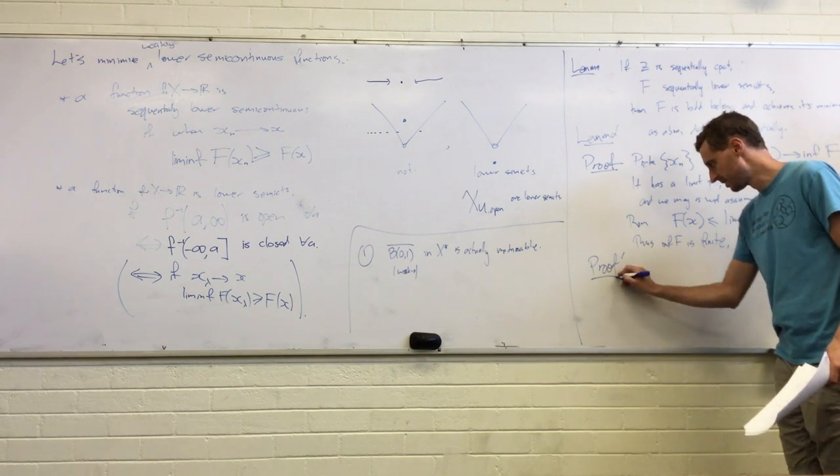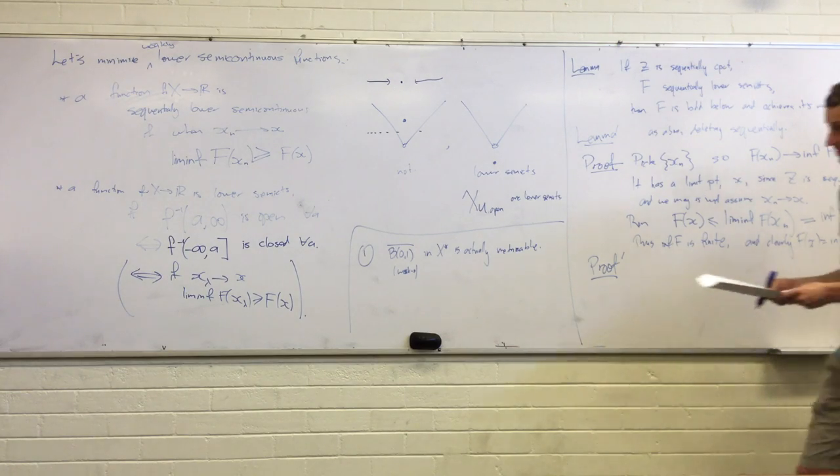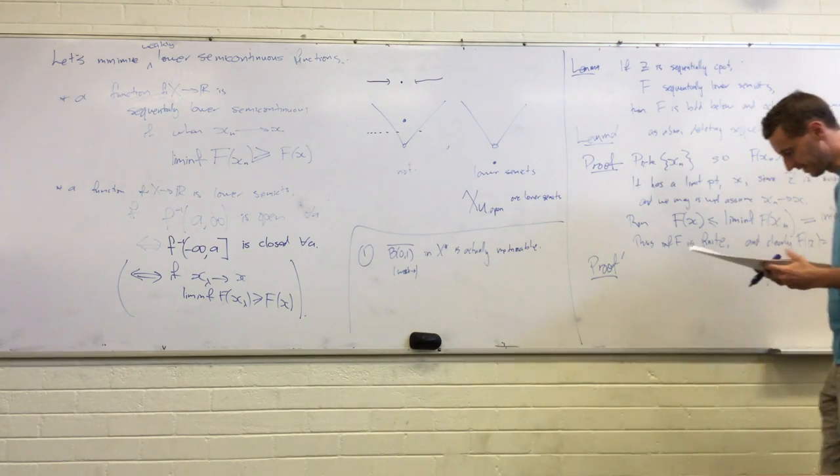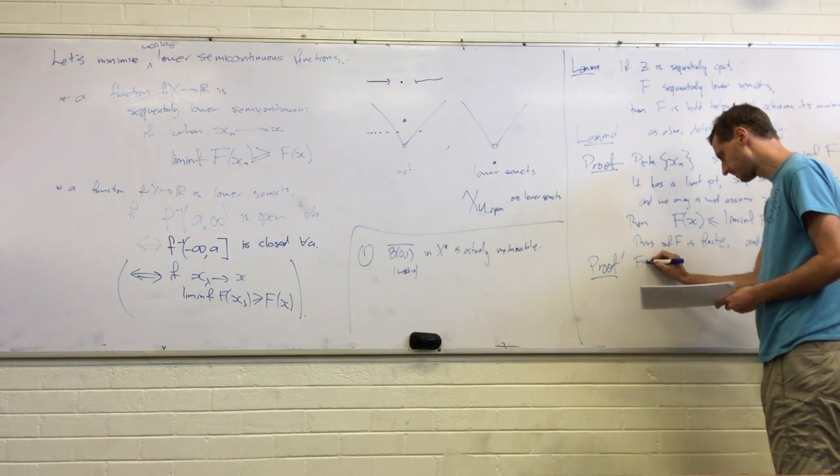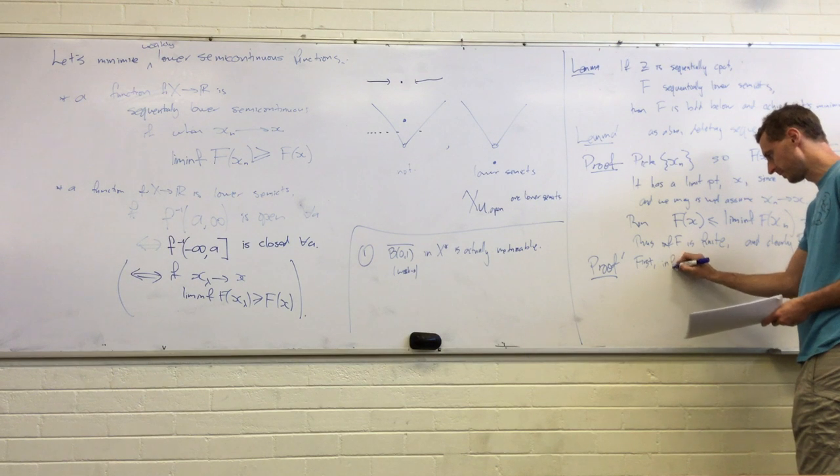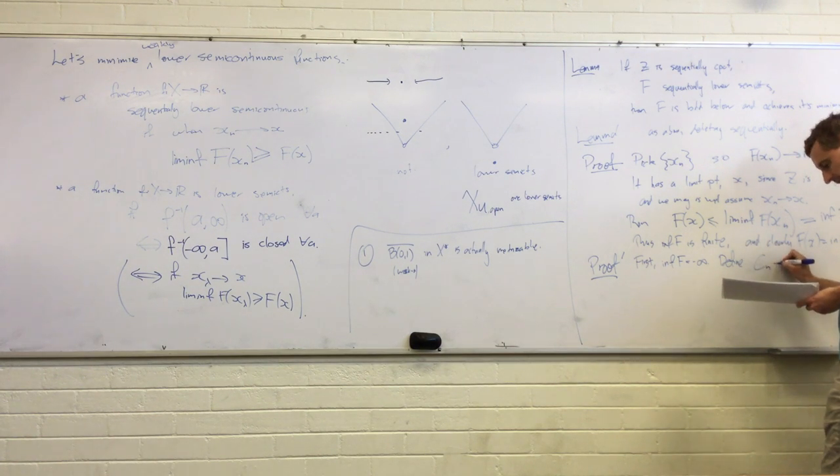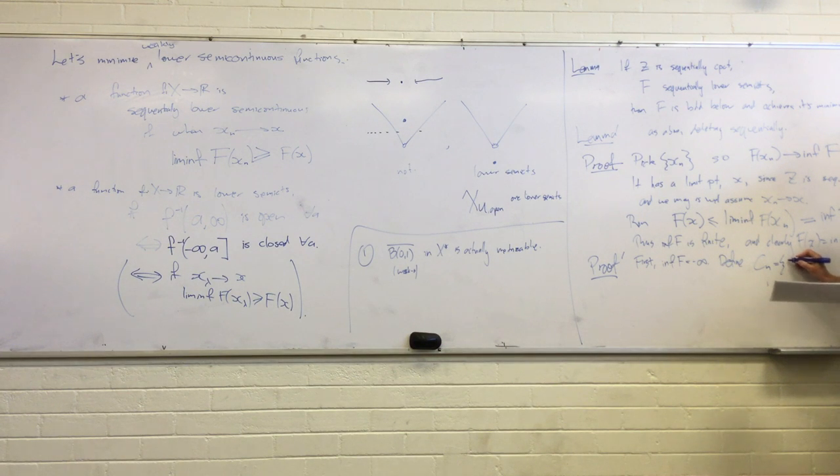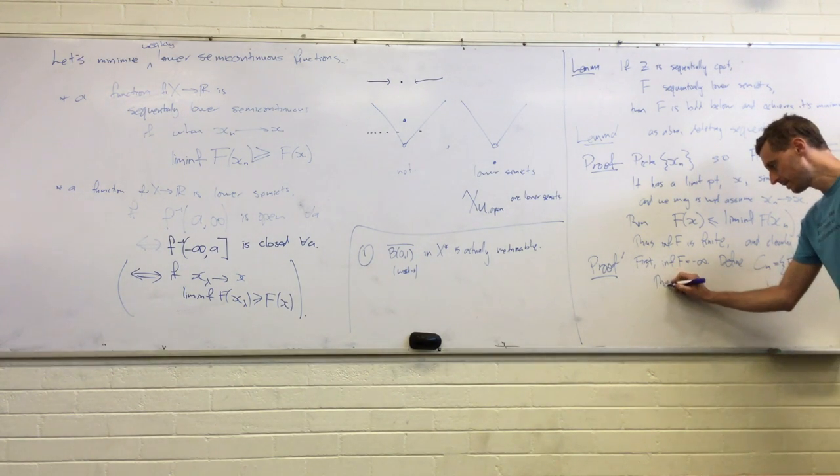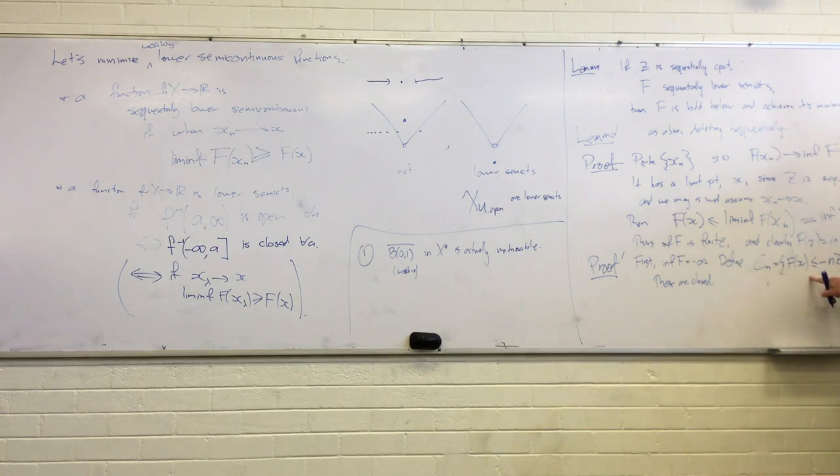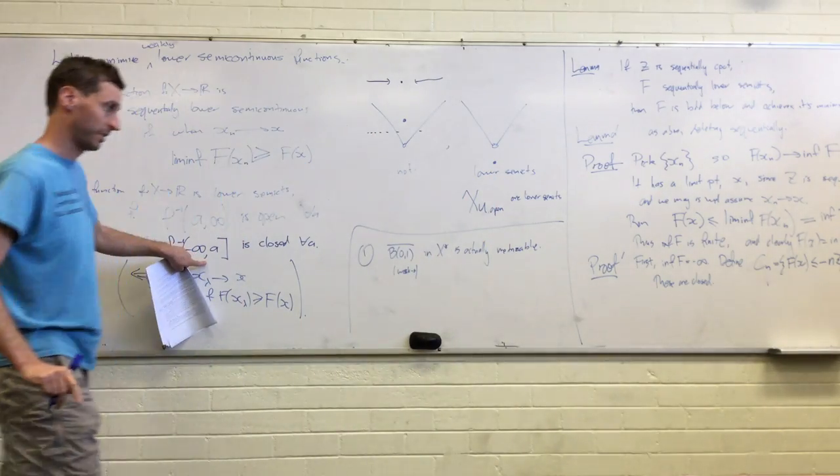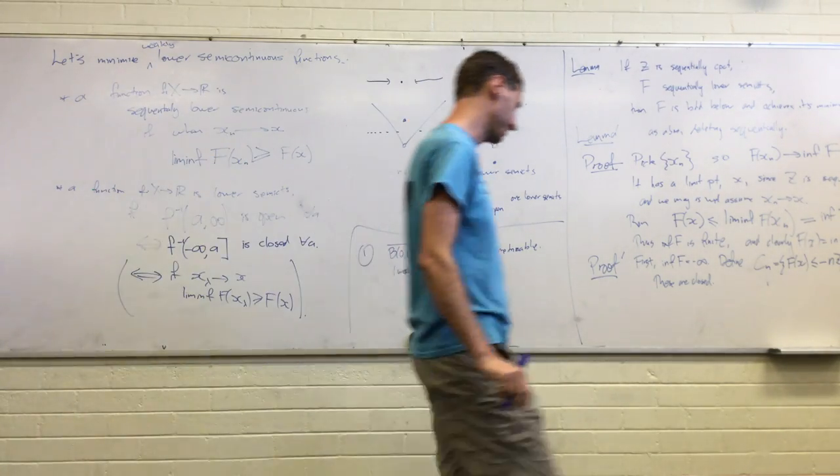And so let's prove the other version of the lemma. And so now we just need to use this version of the statement. So we're going to prove it a bit differently here. So first suppose that the infimum is negative infinity. We can just define some sets Cn, to be all the places where f(x) is at most negative n. Okay. These are closed, because they're exactly sets in this form.